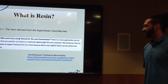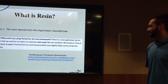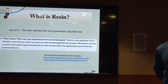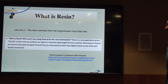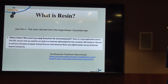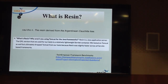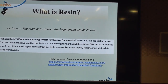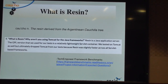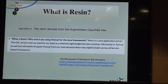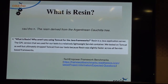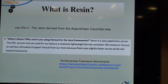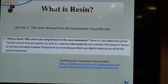Why aren't you using Tomcat? — that was a question on TechEmpower's site. The response was: Resin is a solid app server, and we're using the GPL version. We have two flavors of Resin. They described it as a relatively lightweight server container. They tested Tomcat as well, but ultimately dropped Tomcat because Resin was slightly faster across the framework. Resin GPL is our open source version, with tons of deployments using it in production.